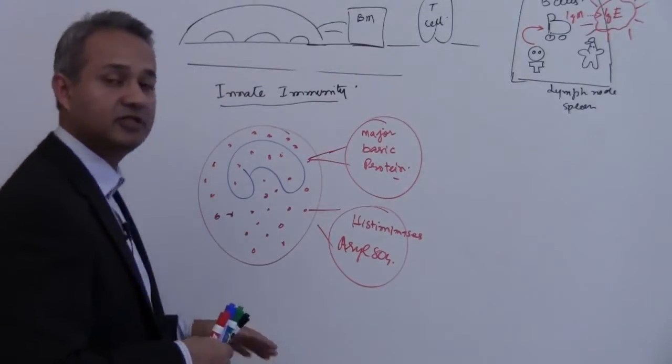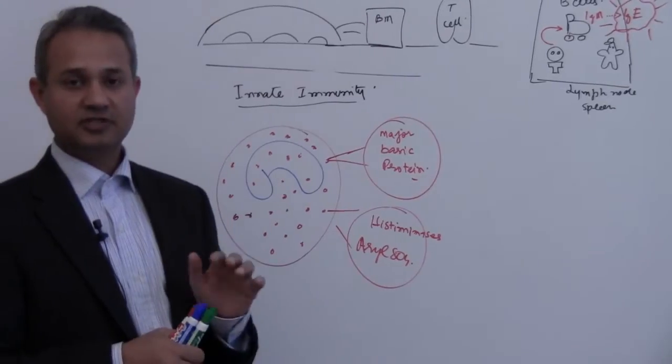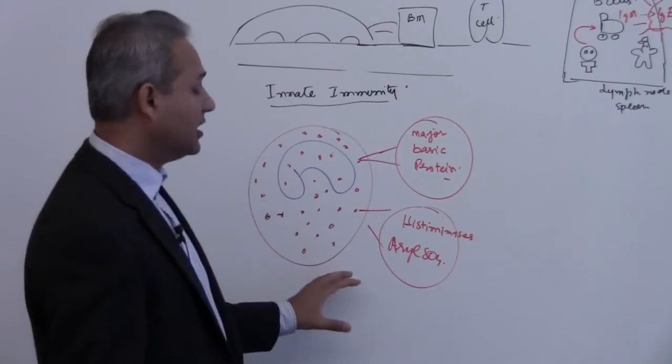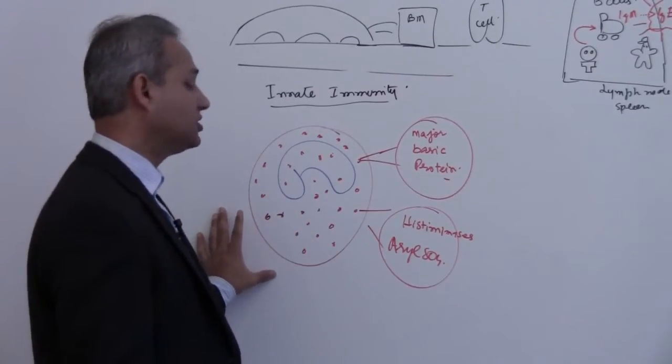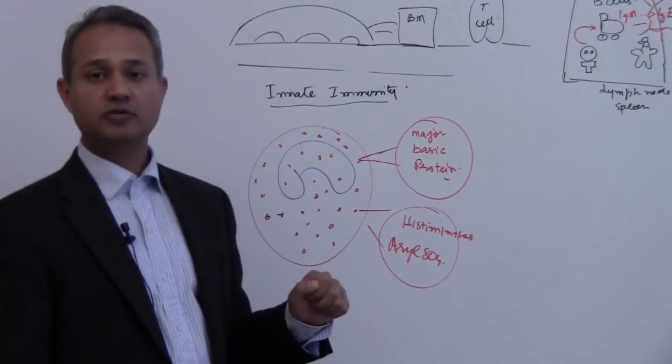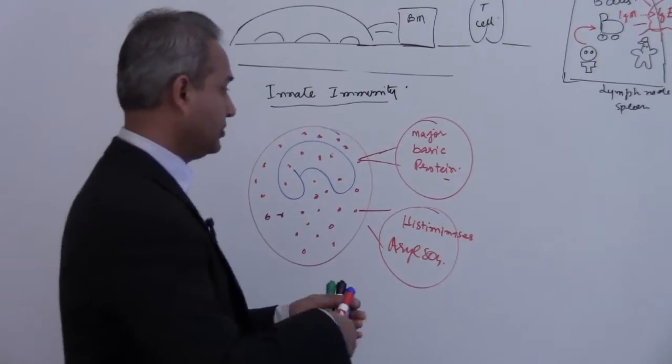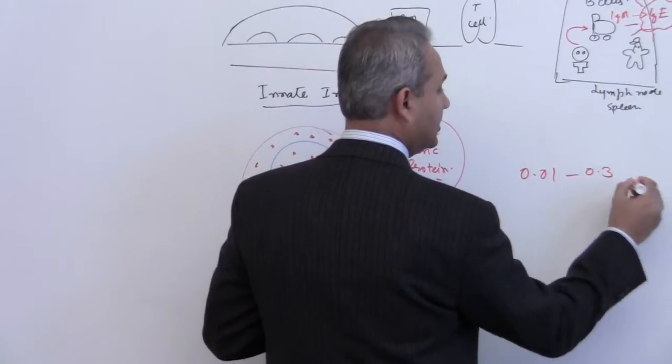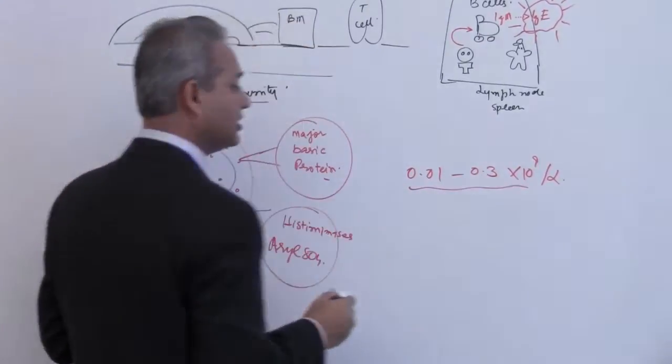The basic function of the cell is really not established yet. It is very important. The other thing is the population of the cell is also very low. So 0.01 to 0.3 multiplied by 10 to the 9 per liter, very small fraction.